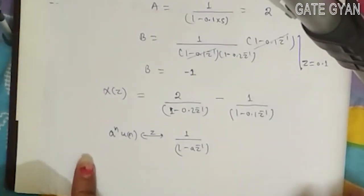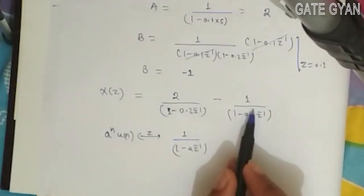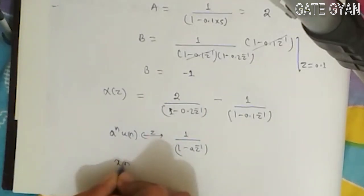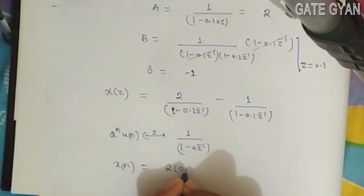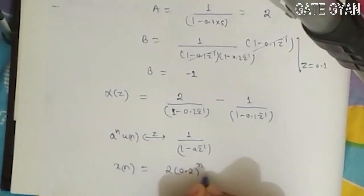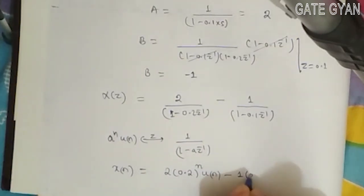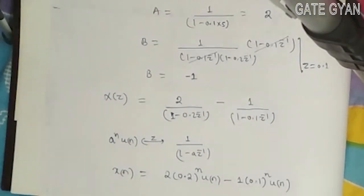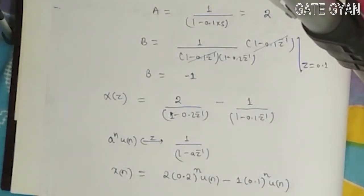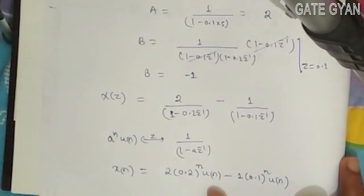So when I take inverse Z-transform of these two terms, my x(n) will become 2(0.2)^n u(n) minus 1(0.1)^n u(n). So here I will get my x(n) in terms of u(n). This is my answer. Thank you.